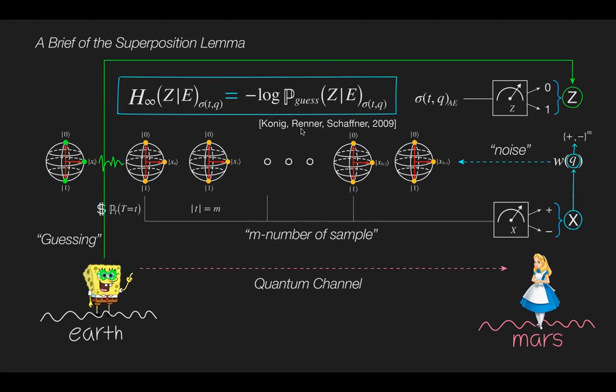In 2009, König, Renner, and Schaffner showed that this conditional min entropy is the maximum surprise on Bob's guessing probability for Xi given his entangled state.